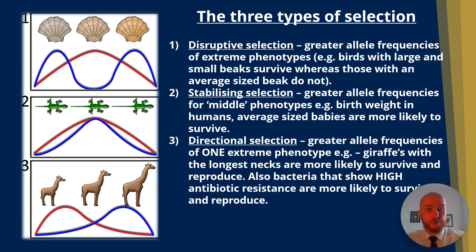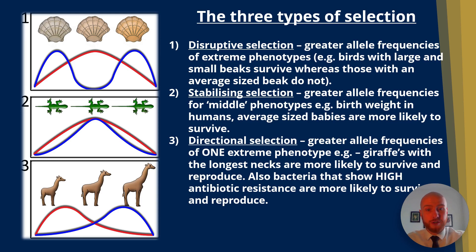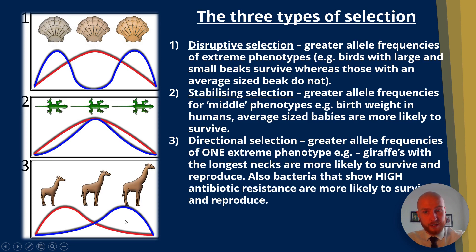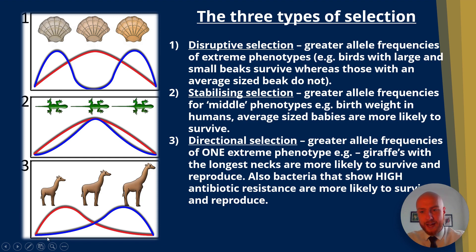Another example for AQA A-level biology is antibiotic resistance. Bacteria resistant to a particular antibiotic have a high survival chance, while completely unresistant bacteria have a low survival chance. We can see in the blue line an increase towards one extreme — this is directional selection.